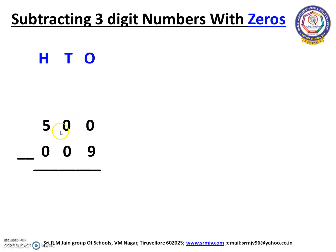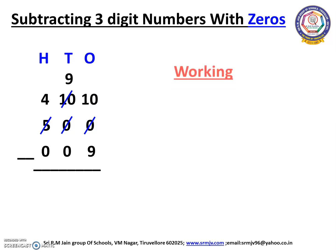We cannot subtract 9 from 0, so we have to borrow from the 10's place. In the 10's place we also have 0, so we cannot borrow. We have to move to the 100's place. Here we have 5. We can get 1 from the 100's place. Now this 5 will change into 4 and the 10's place 0 will change into 10. Now we can get 1 from the 10's place, so the number 10 will change into 9 and the 1's place 0 will change into 10. Now we can subtract 9 from 10.